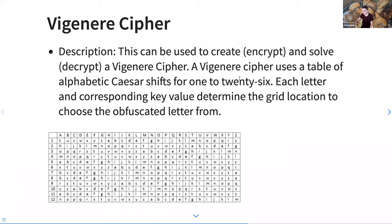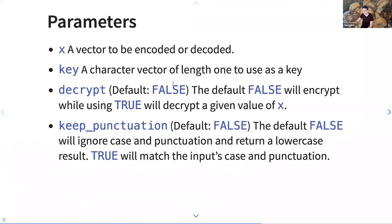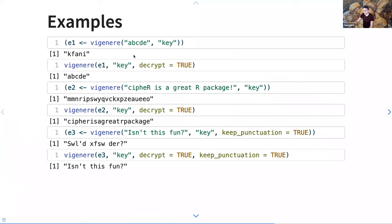Each letter and corresponding key value determine the grid location to choose the obfuscated letter from. You start with a character vector and a key which is another character vector — presumably a word or piece of text. This one is sensitive to encryption versus decryption. I'm also asking if you'd like to keep punctuation, because normally it would not be included.